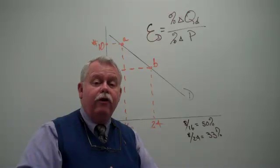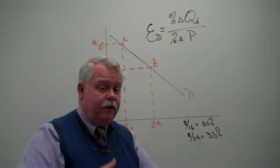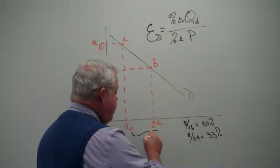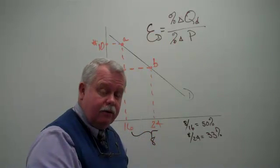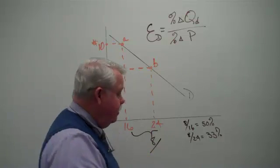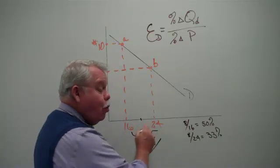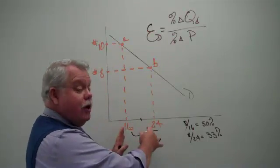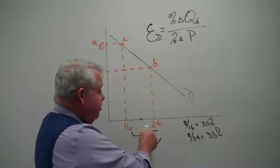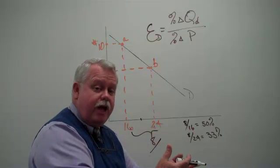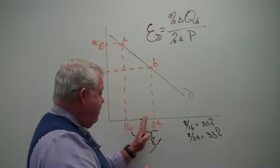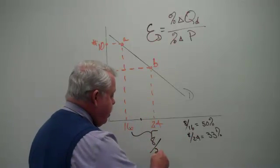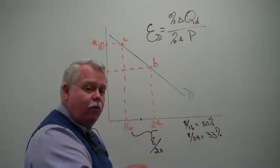Now, a lot of textbooks call this the midpoint formula. It's really easy. What we're going to say is, the change is 8, and we're going to divide that by the average of these two quantities, the midpoint between the two quantities. Conceptually, or even quickly here, 16 to 24 is 8 units difference. Halfway there is 4 units, so 16 plus 4 would be 20, or 24 minus 4 would be 20.